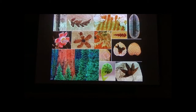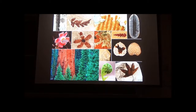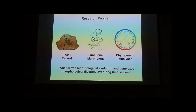Plants have a long fossil record we can draw from, so we can look at changes in form throughout time. Because plants are relatively simple, we can assume that a conifer in the Jurassic is doing a lot of the same things a conifer cone is doing now. In my research, I combine the fossil record with studies of functional morphology, and with large-scale phylogenetic analyses, to understand what drives morphological evolution over timescales of hundreds of millions of years.